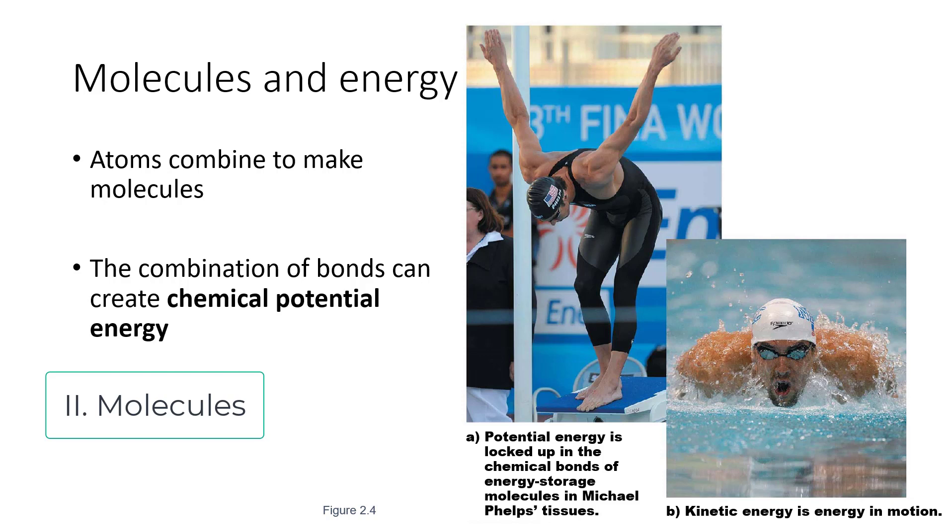Molecules are groups of atoms bound together by types of bonds, and this can be something as simple as H2O, which is two hydrogens and one oxygen forming a water molecule. The combination of bonds creates something called chemical potential energy. This is why something like sugar can be broken down, and as we break those bonds we release energy because you have potential energy in the sugar molecule.